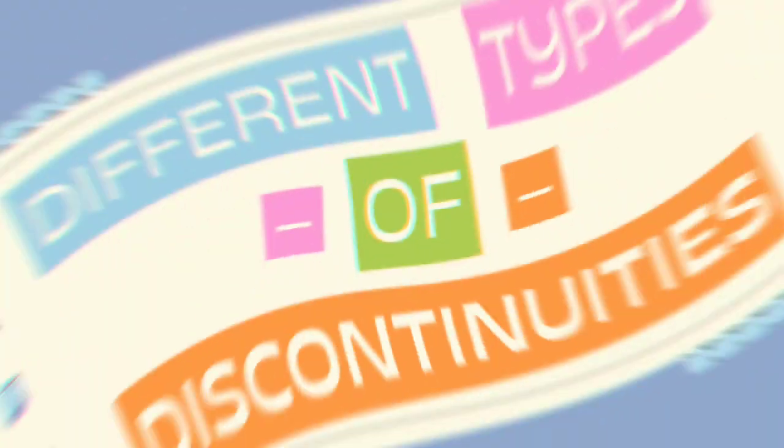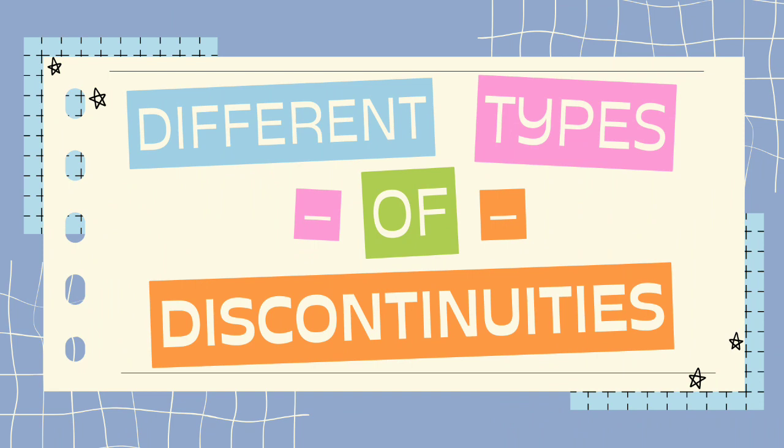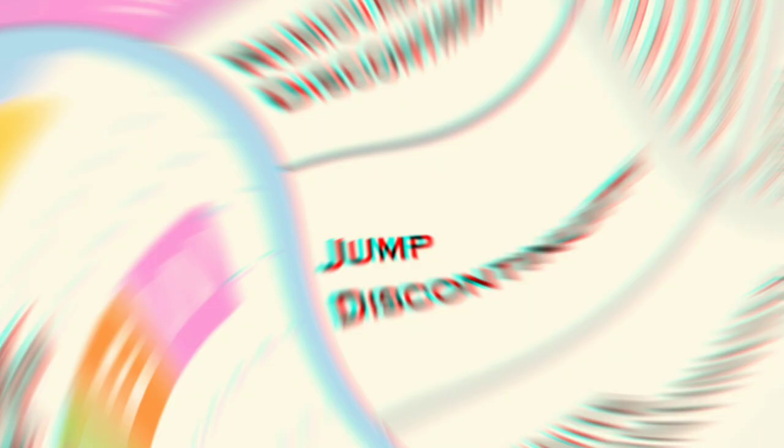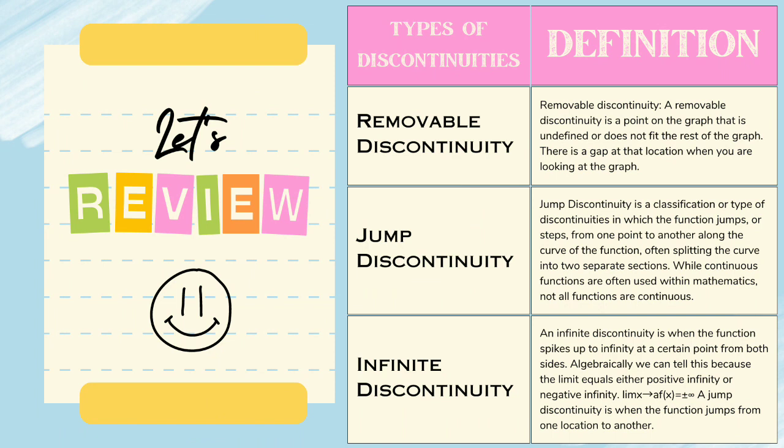Let's review first. What is the definition of removable, jump, and infinite discontinuity? A removable discontinuity is a point on the graph that is undefined or does not fit the rest of the graph. There is a gap at that location when you are looking at the graph. Jump discontinuity is a classification or type of discontinuity in which the function jumps or steps from one point to another along the curve of the function.